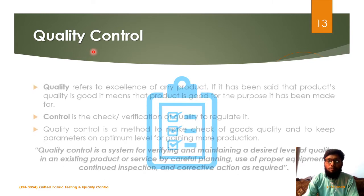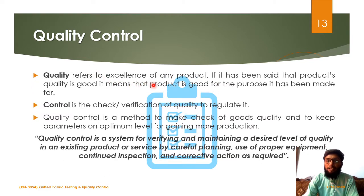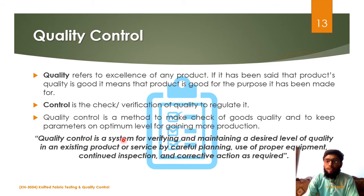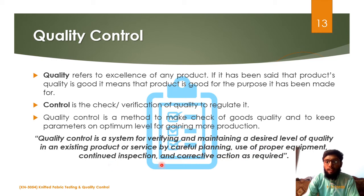Quality control: the term quality refers to the excellence of any product. If we say that a product is of good quality, it means the product is specific for the purpose it has been made for. Control refers to the verification of that quality, which is often done for its regulation. Combining them, quality control can be defined as a system used for verification and maintaining a desired level of quality in any existing product or service through careful planning, use of proper equipment, continued inspection, and corrective action as required.